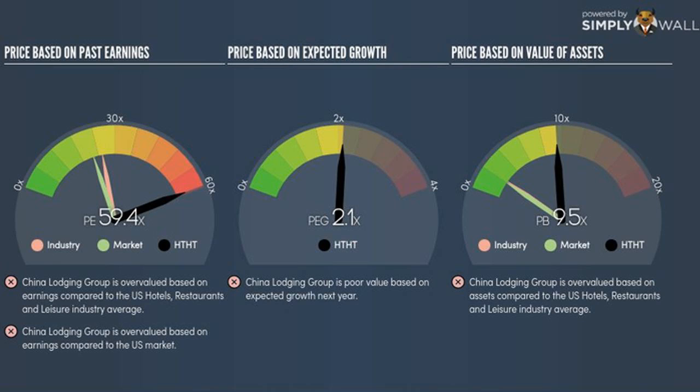The second assumption that must hold true is that the stocks we are comparing HTHT to are fairly valued by the market. If this assumption does not hold true, HTHT's higher PE ratio may be because firms in our peer group are being undervalued by the market.